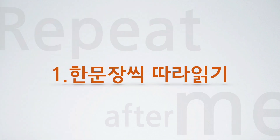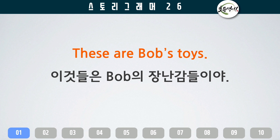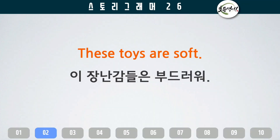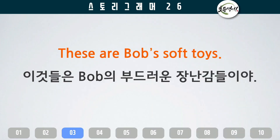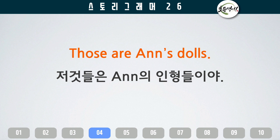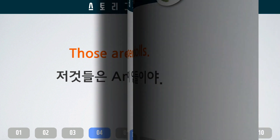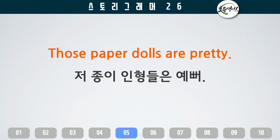1문장씩 따라 읽기. These are Bob's toys. These toys are soft. These are Bob's soft toys. Those are Ann's dolls. Those paper dolls are pretty.